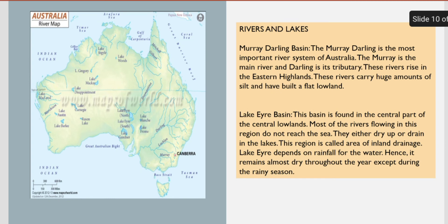Next, rivers and lakes. The Murray-Darling Basin is the most important river system of Australia. The Murray is the main river and the Darling is its tributary. The lake basin is found in the central part of the central lowlands. Most of the rivers flowing in this region do not reach the sea; they either dry up or drain into lakes.